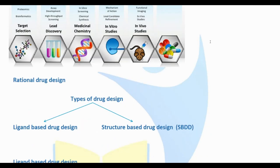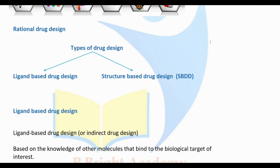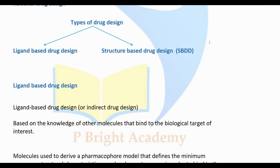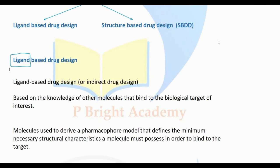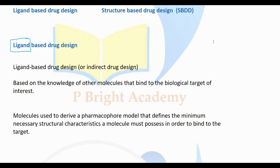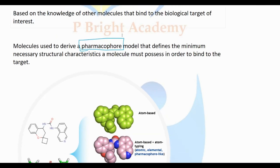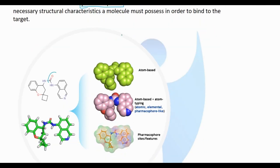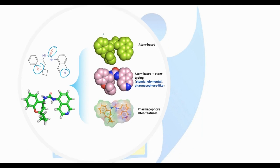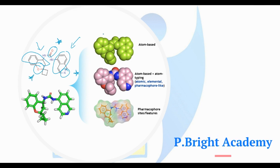There are two methods of rational drug design: one is ligand-based drug design and the second is structure-based drug design. In ligand-based drug design, when the receptor structure is unknown, we identify the chemical features of known active ligands and identify the pharmacophore. We keep the pharmacophore intact while making substitutions to other parts of the molecule.